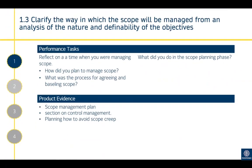Criterion 1.3 is to clarify the way in which scope will be managed from an analysis of the nature and definability of project objectives. You've got your acceptance criteria and requirements, which are very specific about what success looks like, and you can then use that to form how you're going to manage scope. Scope management is all about defining the boundaries of your project — this is what the project covers and this is what it doesn't.